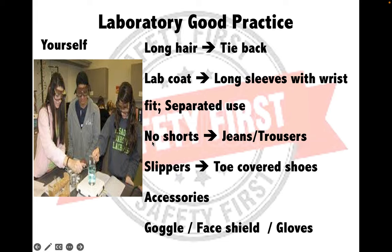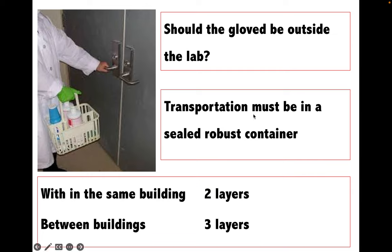Regular lab coat laundering is a must, and it must be separated from normal household laundry. No shorts, slippers, or accessories — you must wear trousers and closed-toe shoes instead. Goggles and face shields are required in certain circumstances. Like the gloves — you should select the correct type of glove for your work. It is strongly recommended that gloves must not be worn outside the lab; however, if necessary, wear one glove on one hand and touch environmental surfaces like doorknobs, elevator buttons, and telephones with the glove-free hand.